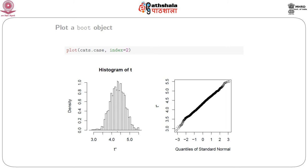We can also check the bootstrap output by plotting it. For example, plot(cats.case, index=2) gives the slope output for the cats dataset using the case resampling method. It gives histograms of all possible bootstrap statistics of slope and a QQ plot. One can also use the jackknife-after-bootstrap plot using jack.after.boot, which points out which outlier or data point has a significant effect. We have already seen an application of this function in our last class. Once the bootstrap output is confirmed, the user can proceed to use the output.